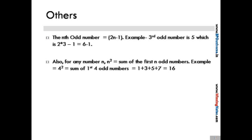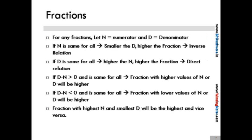Let's see some of the rules which we have for fractions. For any fraction, if N is a numerator and D is a denominator: if the N is same for all, smaller the denominator, higher will be the fraction. If the denominator is same, and in that case higher the N, higher will be the fraction. In case difference between denominator and numerator is positive—if that means that the denominator is greater than the numerator—then fraction with higher value of numerator or denominator will be higher.